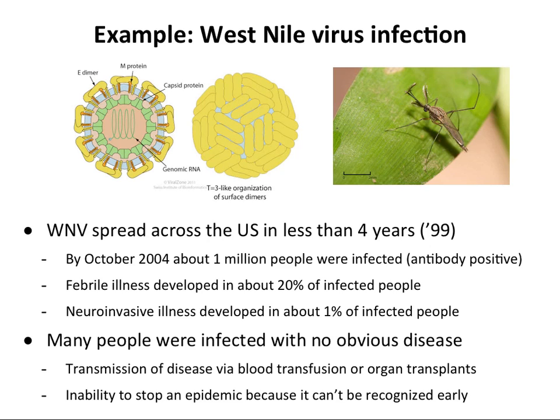Queens. It was a hot summer and for some reason it took off, and it spread in less than four years across the entire country — from Queens, now everywhere in the US, in Mexico, Canada, and up to Alaska. In those four years a million people were infected. We measured antibodies — there was a lot of surveillance since it was a new introduction. Twenty percent of the people got fever, but without a diagnostic you wouldn't know what the fever was from. One percent got neuroinvasive illness — the virus went into the CNS and caused encephalitis. So a lot of people got infected with no obvious disease. If there's no obvious disease and you give blood, you can transmit the infection to someone else. So you have to check the blood supply for this virus.